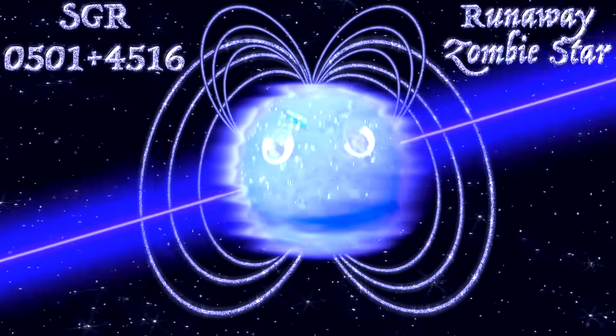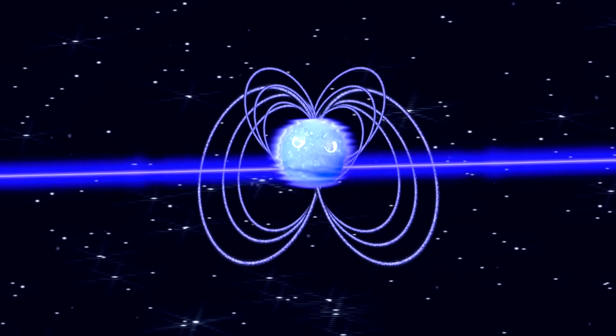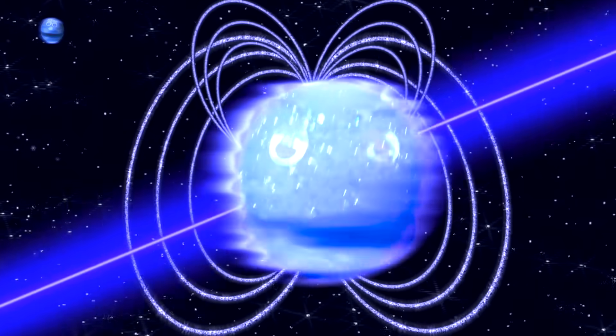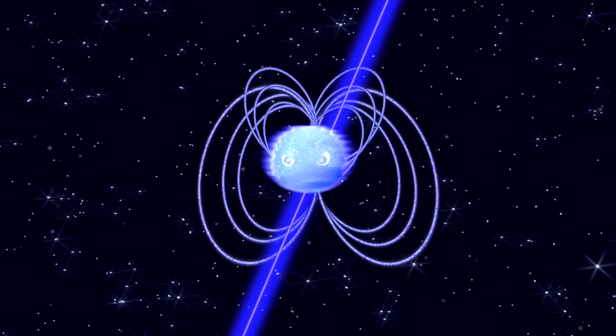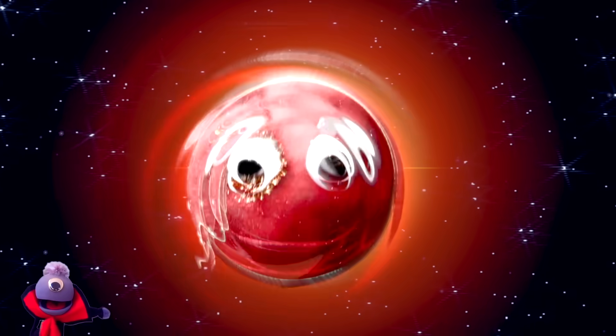SGR0501 plus 4516, a runaway zombie star whose origin is a mystery. A neutron star with an extremely strong magnetic field, or magnetar, that's me. In fact, my magnetic field is about a trillion times stronger than Earth's can be. Don't get too close, I'm like a zombie death ray and could rip you apart just by me.